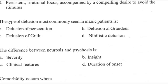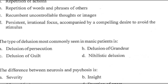Question 95: What is the type of delusion most commonly seen in a manic patient? Options: A, delusion of persecution; B, delusion of grandeur; C, delusion of guilt; D, nihilistic delusion. Right answer is B — delusion of grandeur.